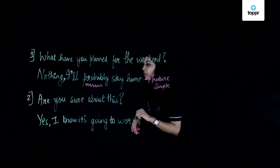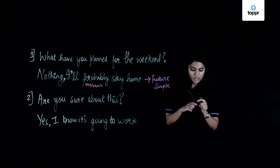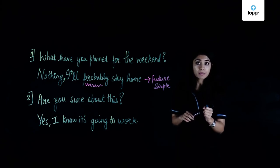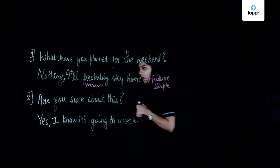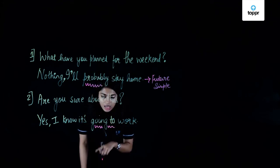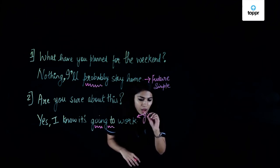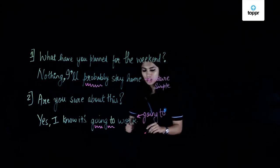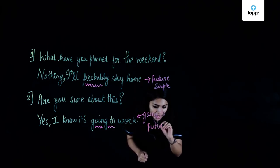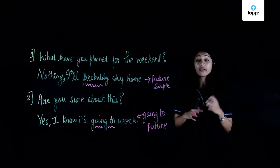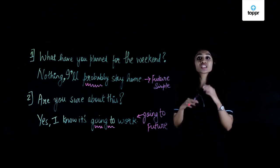Let's look at the second example. Someone asks me, 'Are you sure your students are going to pass their exam?' I say, 'Yes, I'm sure they're going to pass because they've worked really hard. I know they're going to pass.' So it's going to future — I'm expressing certainty. I hope with these two examples you've understood the difference between simple future and going to future. Let's move on to the future continuous tense.